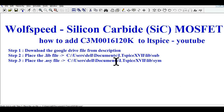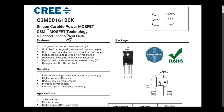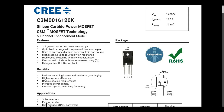Let us first go through what is the C3M0016120K and understand its parameters. This is a Silicon Carbide power MOSFET used in high power, high frequency switching applications. It is used in solar inverters, EV motor drivers, high voltage DC-DC converters, and switch mode power supplies.